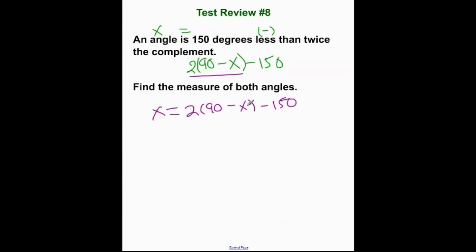Working our algebra. Let's go ahead and distribute the 2. That's 180 minus 2x plus 150. I could do it a couple of different ways. But I'm going to go ahead and get my x's to one side. I'm going to add 2x to both sides. That gives me 3x is equal to 180 minus... Did I put a plus sign there? I'm an idiot at times.